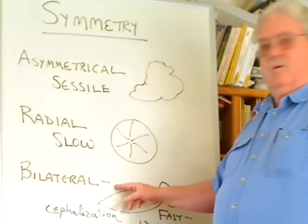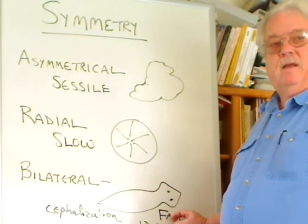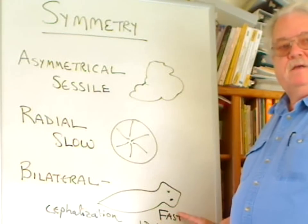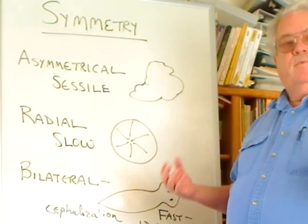Bilaterally symmetrical organisms, on the other hand, have to have a streamlined shape because they move fairly fast, and they tend to move in one direction.